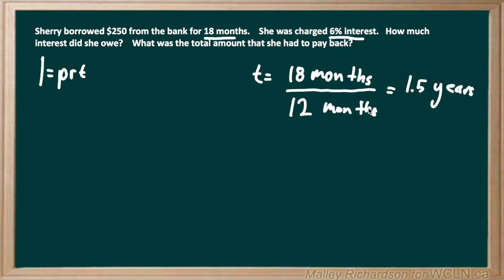So now R and T are in the same units of years, so now we can plug in what we know to our formula. We're solving for I, and we know that P is how much she borrowed, so that's $250 multiplied by our annual interest rate, but our interest rate is in percent, so we want to change 6%